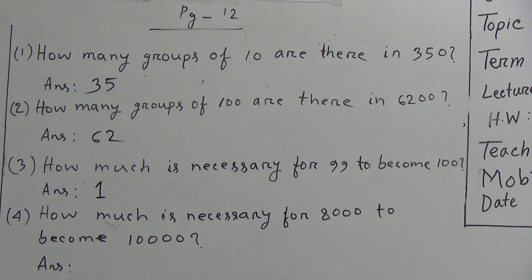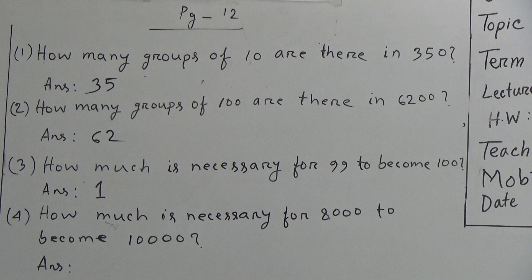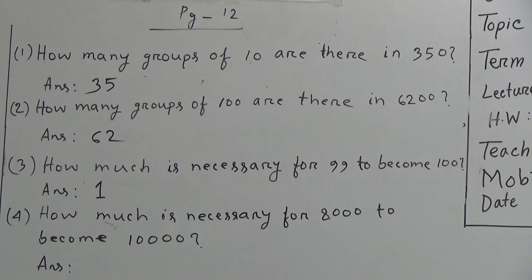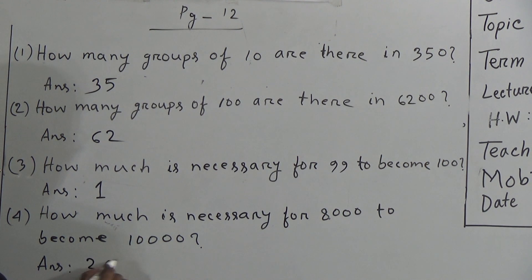Now question 4: how much is necessary for 8000 to become 10,000? That means, which number is to be added with 8000 to get 10,000? If we subtract 8000 from 10,000, it will be 2000. So the answer will be 2000.